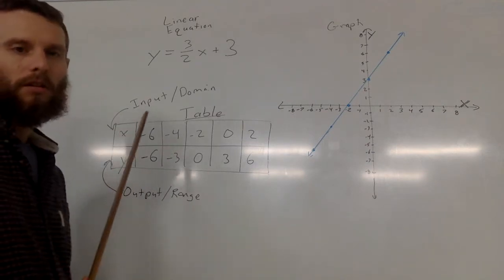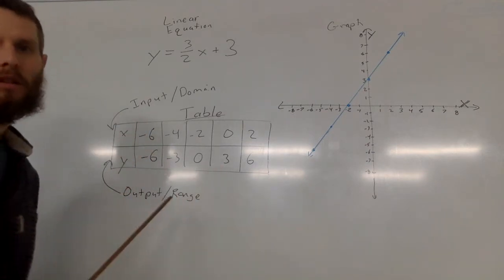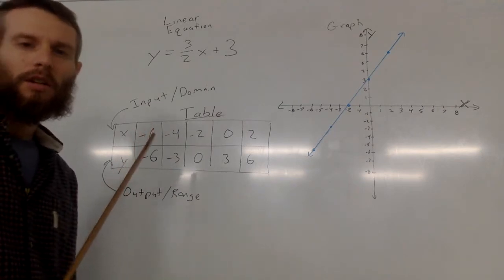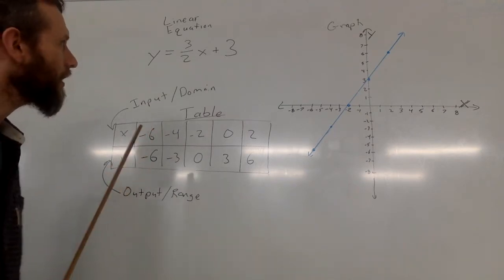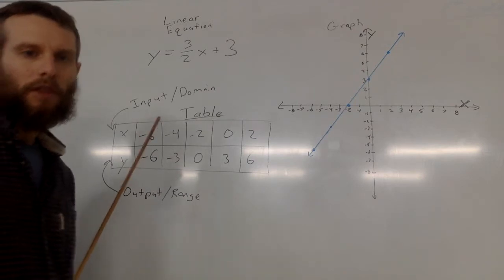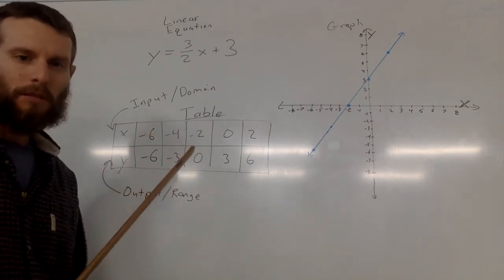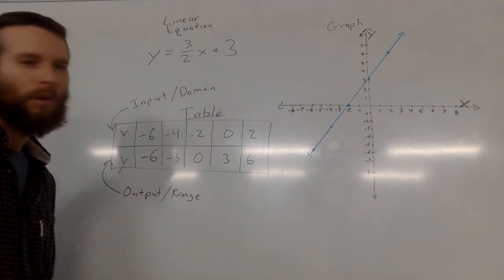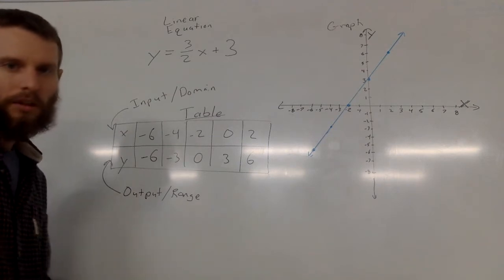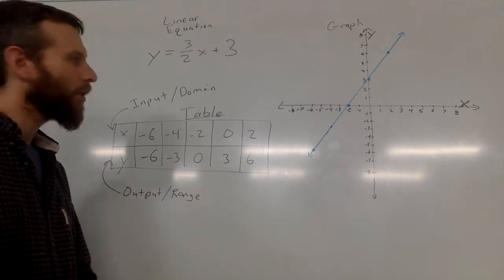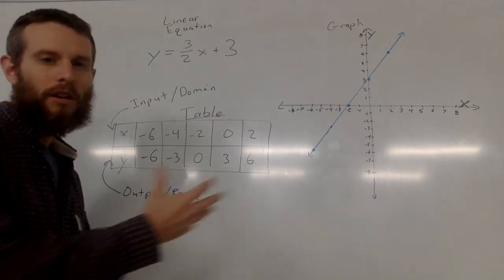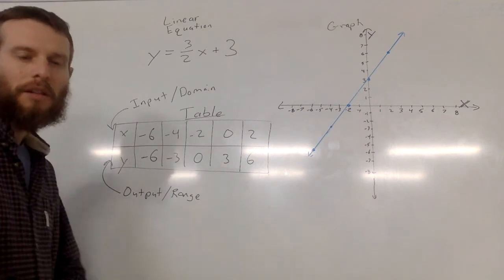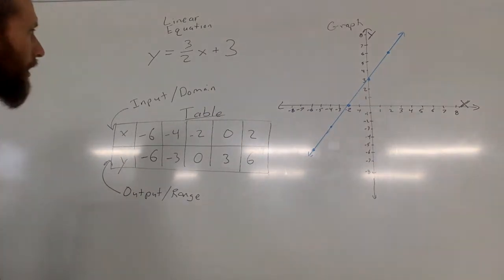Oftentimes, for linear equations, we call this an equation. It can also be called a function. And a function just means that for every input, and I'll explain what that means in just a second, for every input, there's only going to be one output. So you can't input one number, and then out come two different numbers. And again, as we start to unpack this, and we talk about domain and range, you'll see what that means.